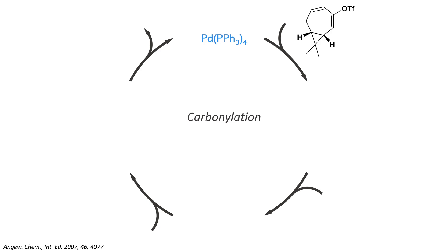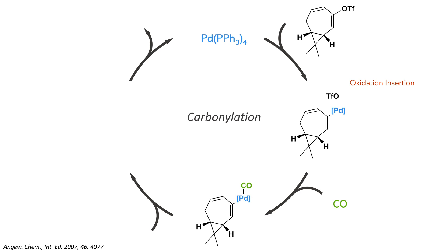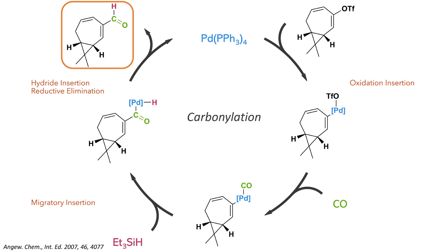To carry out the carbonylation reaction, the authors used a palladium catalyst. This undergoes oxidative insertion into the carbon-oxygen bond. Carbon monoxide then binds to the palladium centre, and triethylsilane promotes a migratory insertion which rearranges so the carbon monoxide is now bound to the carbon and the palladium now bears a hydride ligand. Reductive elimination inserts this hydride to the carbonyl group to form the aldehyde and regenerate the active catalyst.